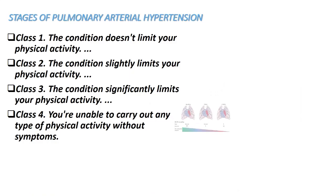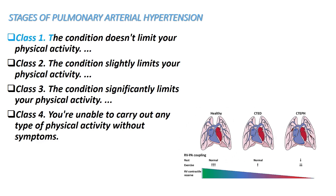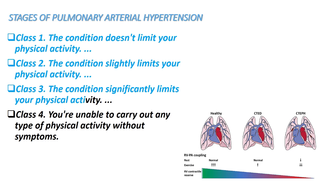Stages of pulmonary arterial hypertension: Class 1 — the condition doesn't limit your physical activity. Class 2 — the condition slightly limits your physical activity. Class 3 — the condition significantly limits your physical activity. Class 4 — you're unable to carry out any type of physical activity without symptoms.